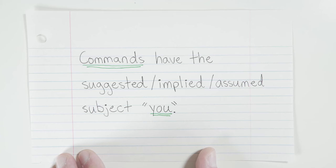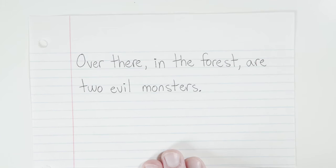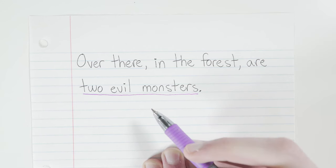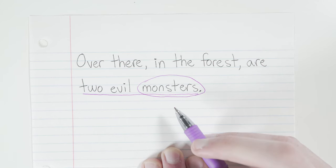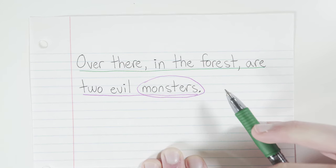So now let's see if you can do a few. Take a look at this. Over there, in the forest, are two evil monsters. Take a minute and see if you can find the complete subject. Got it? Should have said, two evil monsters. Which again, is not in a very traditional spot in the sentence. But once you've found that, you should know that the simple subject is just monsters. And the rest of the sentence would be your complete predicate. And what would your simple predicate be? Answer is, are.